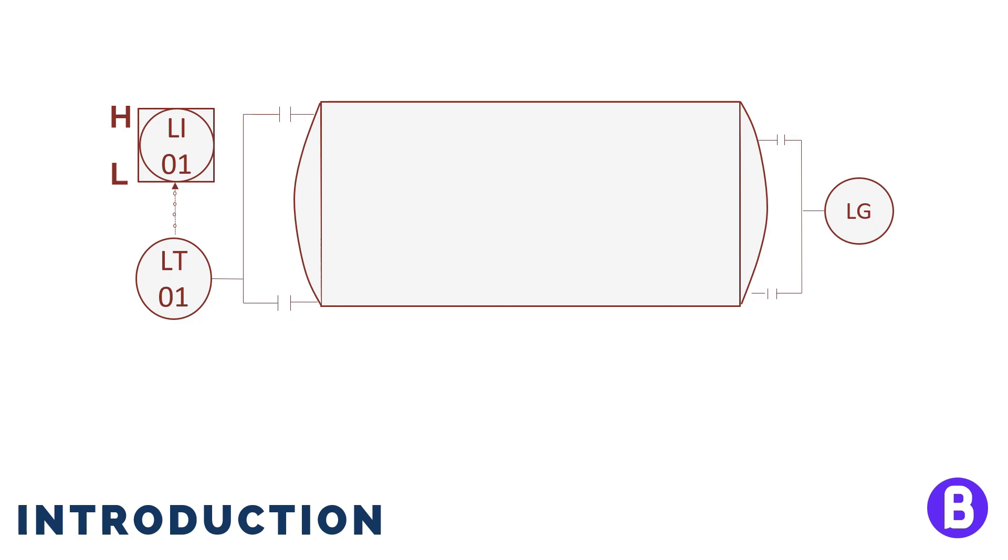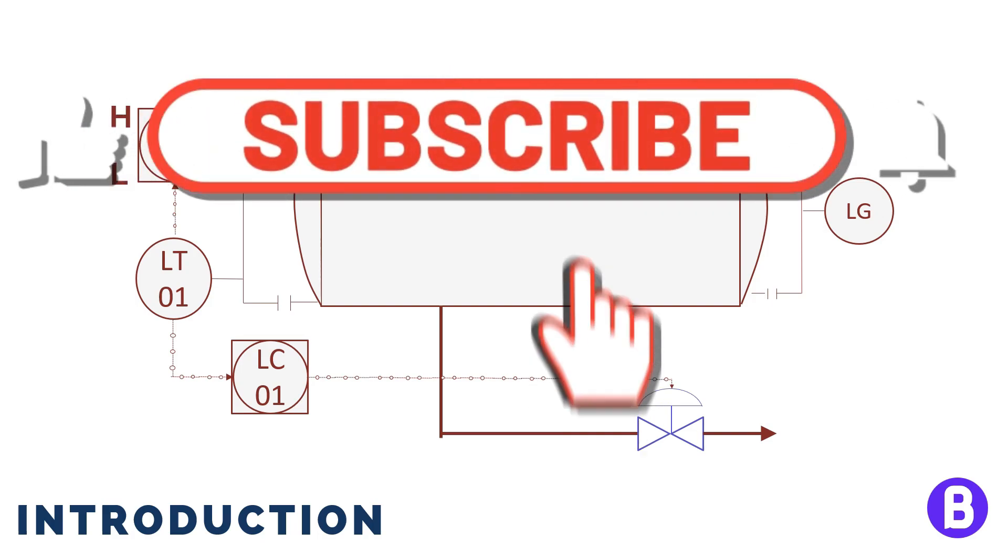If this level is used as a control parameter, then we shall see this level transmitter connected to a level control through an input signal, and the controller shall then process the reading and give an output. Based on the controller output, this shall send an output signal to the control valve, which adjusts its opening to keep the level in the vessel at the required set point.